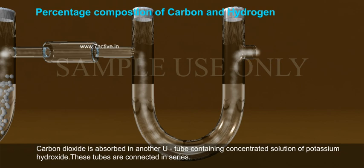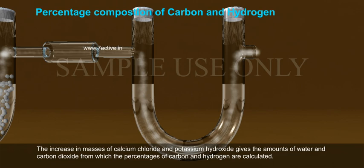These tubes are connected in series. The increase in masses of calcium chloride and potassium hydroxide gives the amounts of water and carbon dioxide from which the percentages of carbon and hydrogen are calculated.